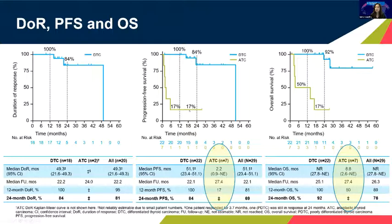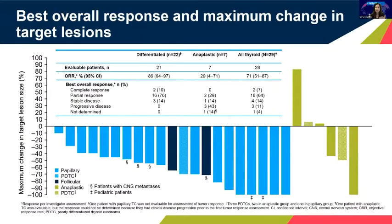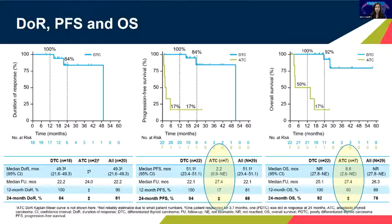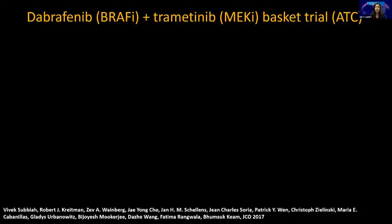This is a really interesting graph because if you look at the BRAF inhibitor data, it's actually the opposite: we see fewer responses in DTC but phenomenal responses in ATC. Hopefully at some point we'll understand this better.